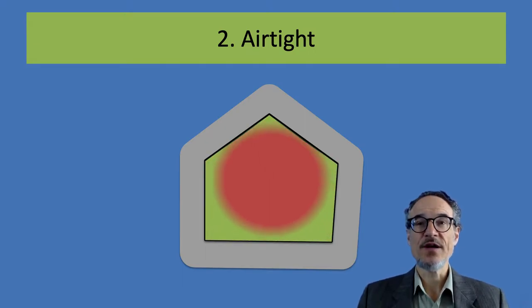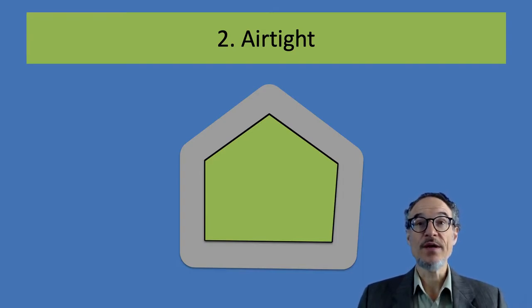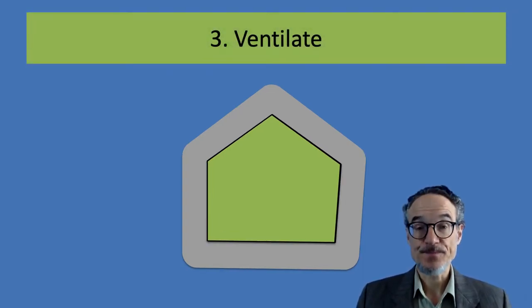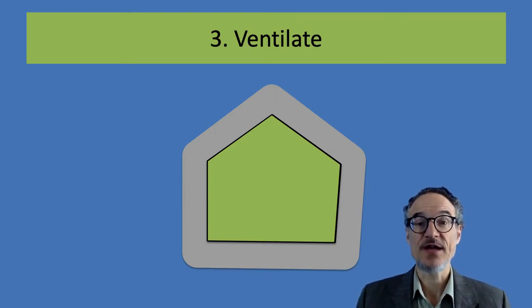If we're worried about humidity in the winter, we need to be airtight on the inside and prevent the hot air with its humidity from going through the walls and condensing in the walls. Of course, if it is airtight, we're in danger of humidity, and we need ventilation, which is the next part of the Passive House standard.